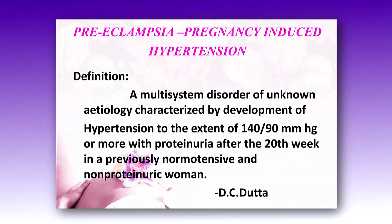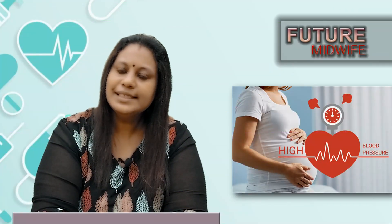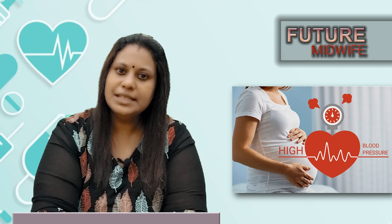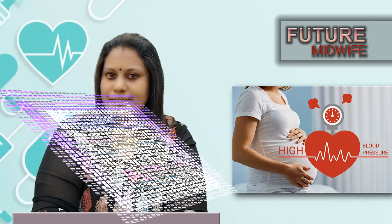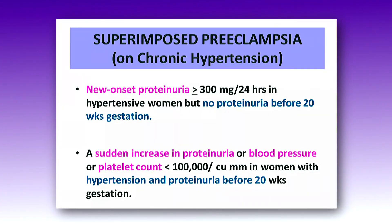Next, we'll see what is meant by preeclampsia. It is a multi-system disorder of unknown etiology characterized by development of hypertension of 140/90 mmHg or more with proteinuria after the 20th week in a previously normotensive and non-proteinuric woman. Eclampsia is when preeclampsia is associated with a seizure.